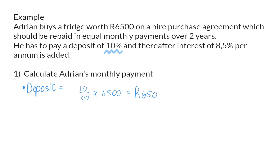Next we need to know what the balance is on which interest will have to be paid. This balance is the original price of the fridge minus the deposit that he already paid, and that means the balance that he still owes is R5,850.